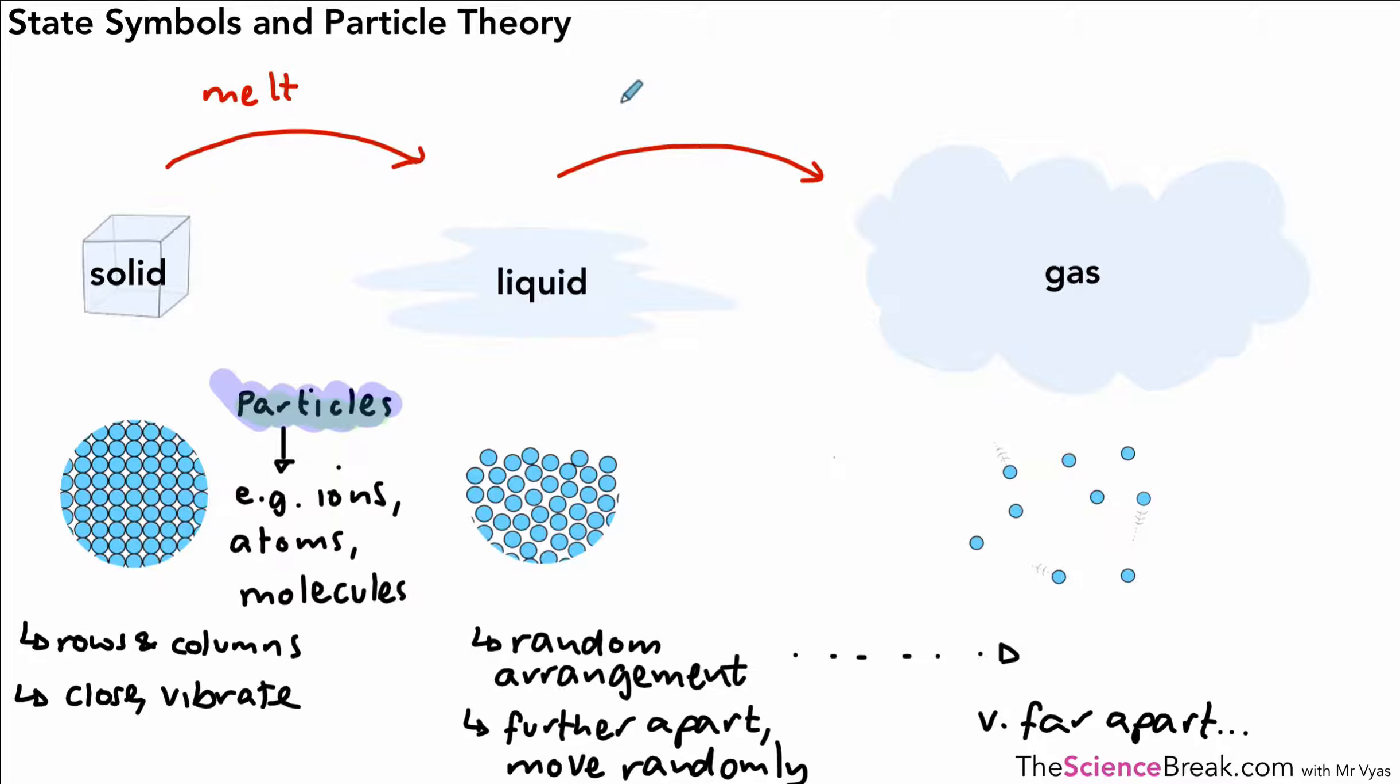We know that a solid can be changed to a liquid by melting it, and we could change a liquid to a gas by boiling it, which would make it evaporate. If we're talking about melting points and boiling points, those are the words we should use.